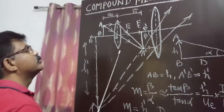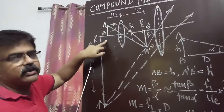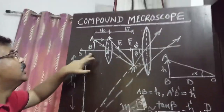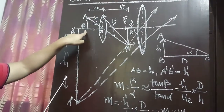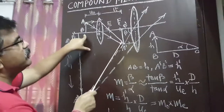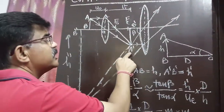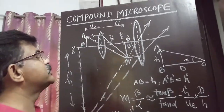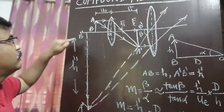Look here — in the compound microscope, we place the object just in front of this lens. This lens is called the objective lens, and the other is called the eyepiece. The object AB is placed just before the focus of the objective lens. By the law of image formation, the objective lens forms an intermediate image A'B'. We then move the eyepiece forward and backward such that this image A'B' falls between its optical center E and the focus of the eyepiece, so the final image A''B'' is formed here.